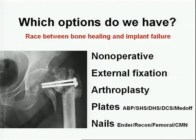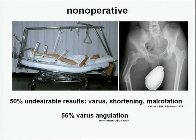So what options do we have? We have non-operative treatment, external fixation, arthroplastic plates, and nails. Non-operative treatment is associated with more than 50% undesirable results and comorbidities from prolonged immobilization, so it should be spared for special indications.